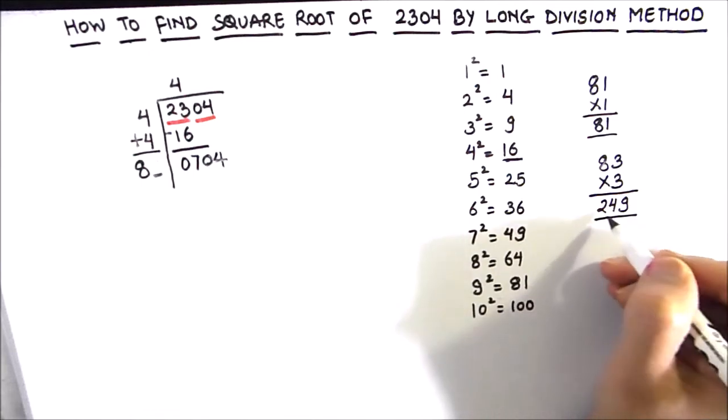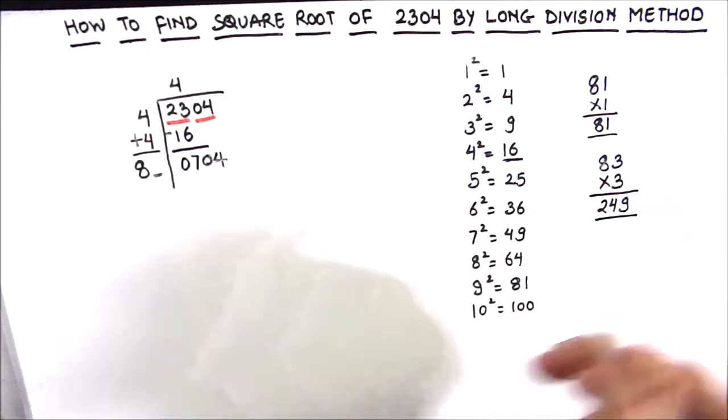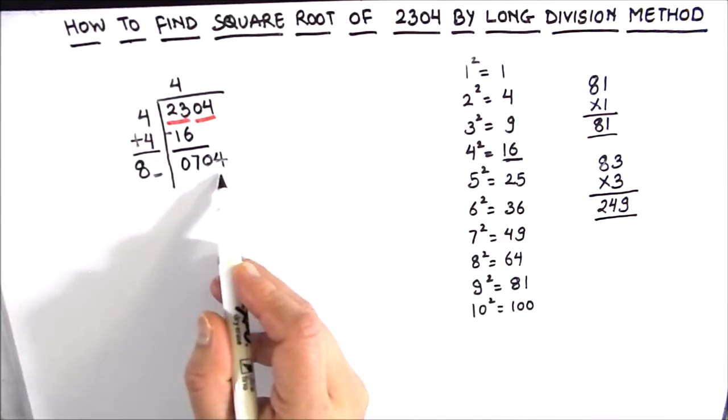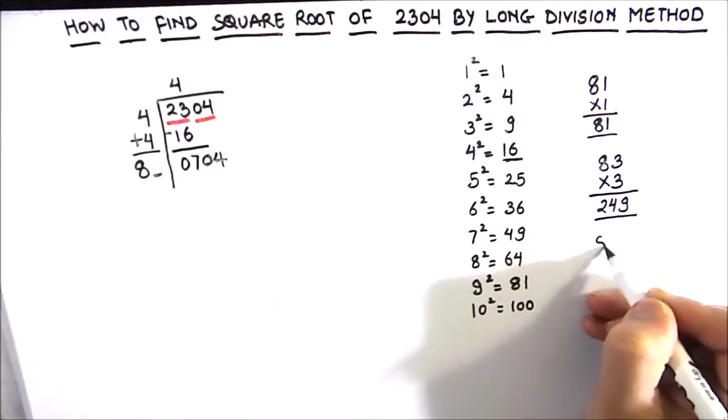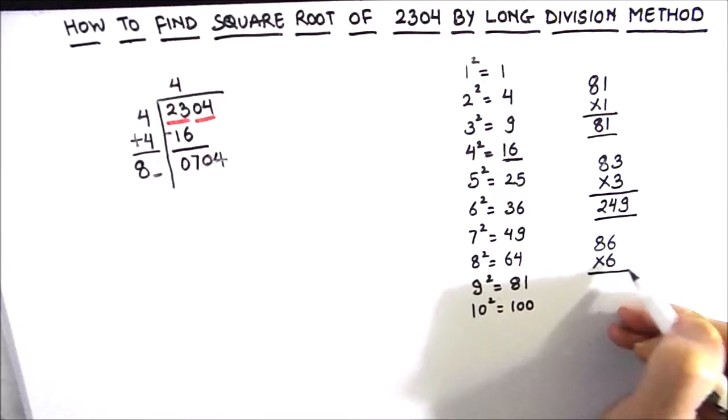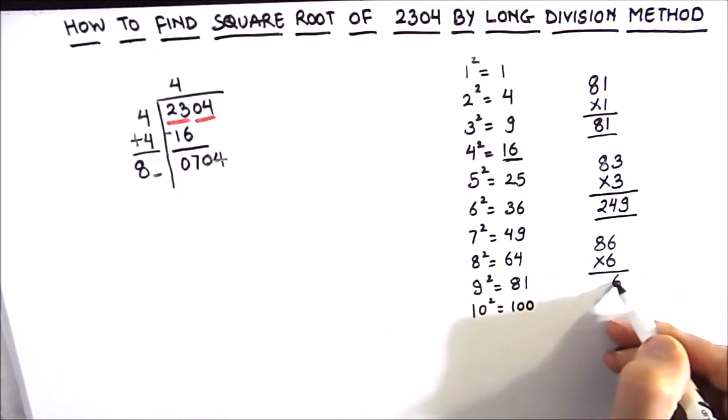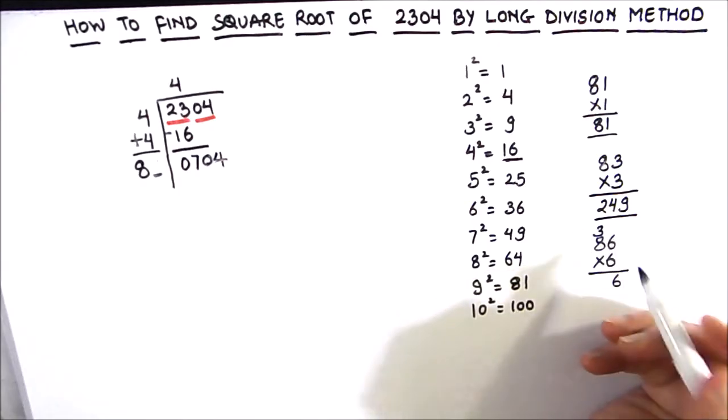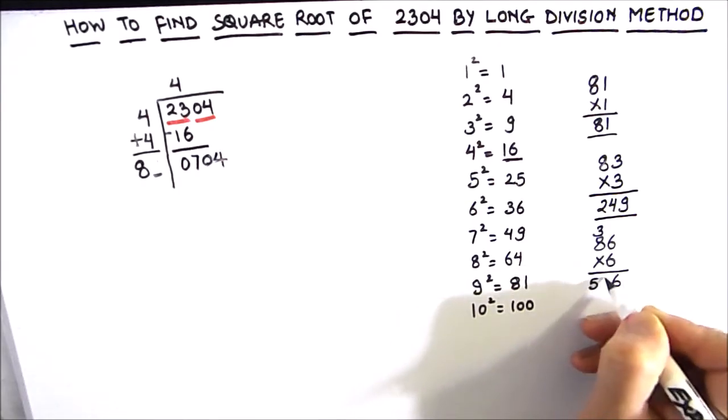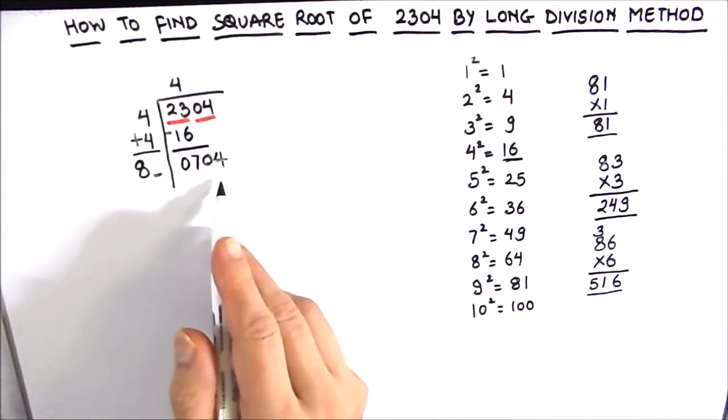Now let us annex 6. So 86 times 6 will be 6 times 6 is 36 and 3 will be carried over. 6 times 8 is 48, 48 plus 3 is 51. This is also less than 704.